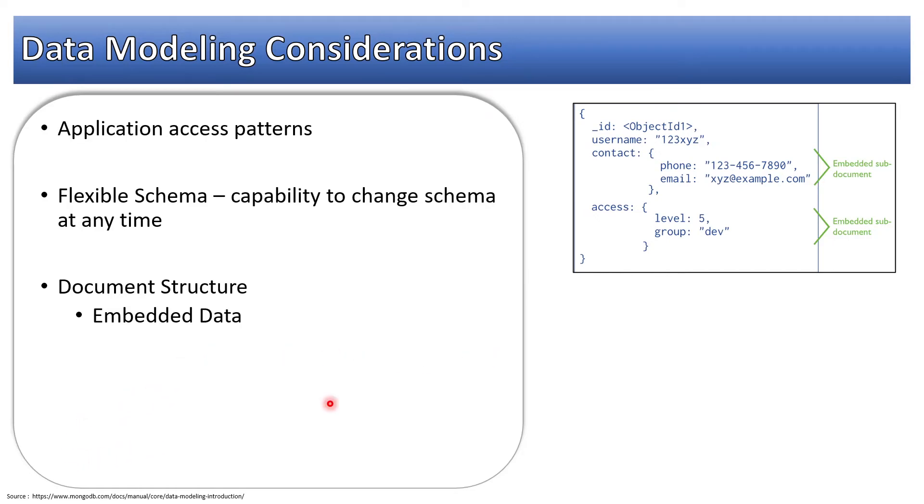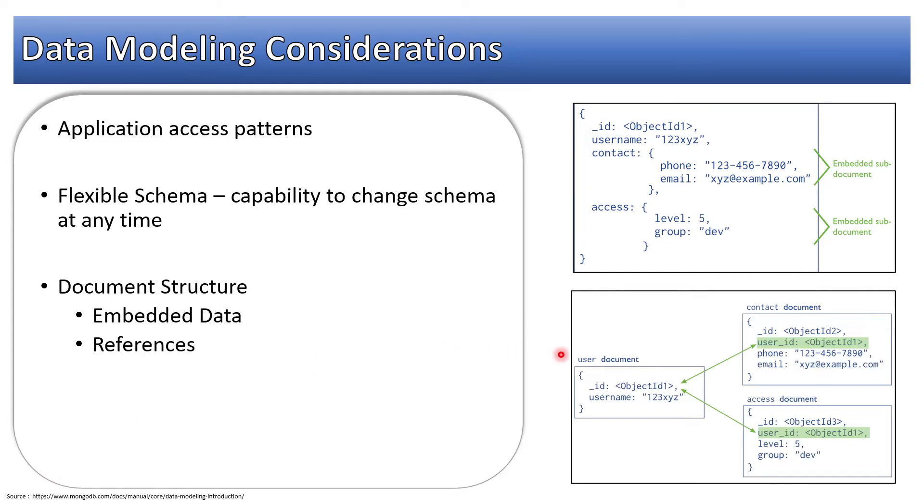Here is another way - we have a user document where we only have ID and username, then a contact document. In this contact document, we have placed a reference to this user ID, so it is pointing to this user ID, and there we are storing phone and email. Here we are storing the ID as a unique record ID to make this record unique. Same way with the access document. You can see that these are three collections, but here we have only one collection.